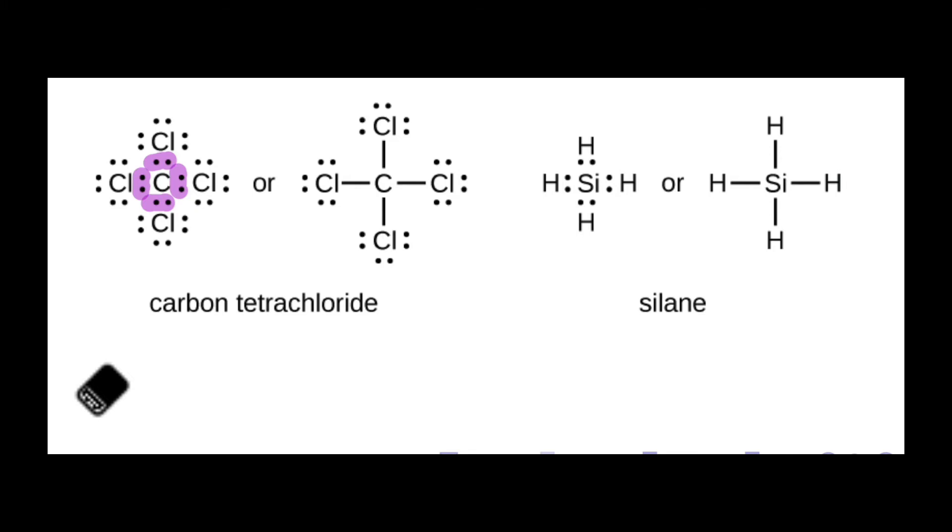We can also see that in the representation where those bonding electrons are converted into lines, and this is much more common in Lewis structures. We typically, to distinguish visually between bonding and non-bonding electrons, take bonding pairs and draw them as lines to represent covalent bonds. That's a total of eight electrons.